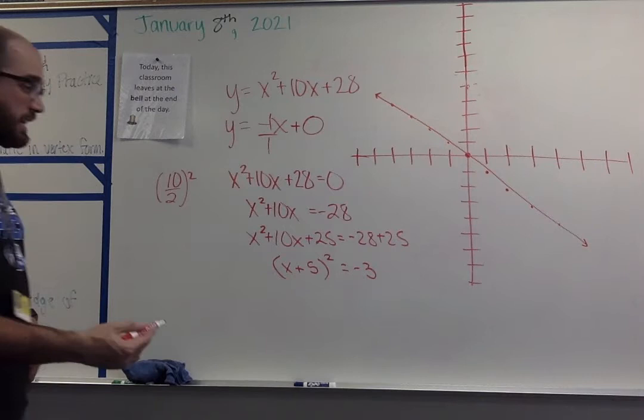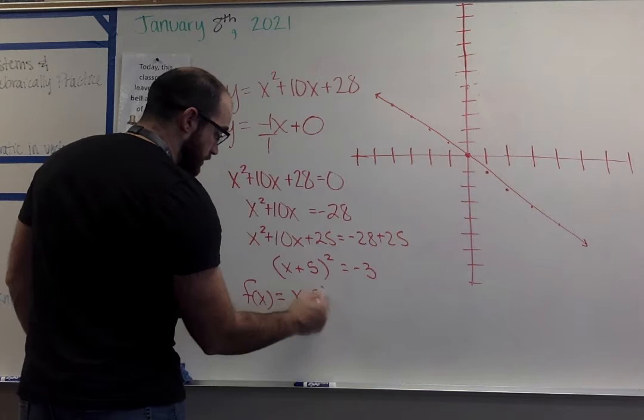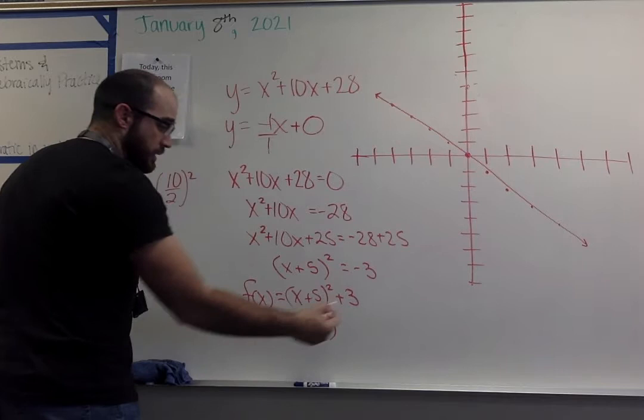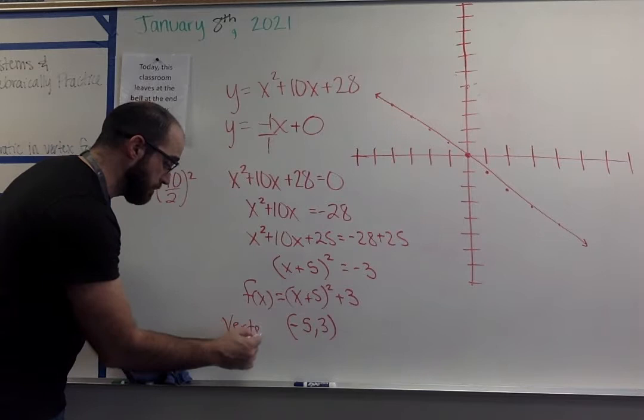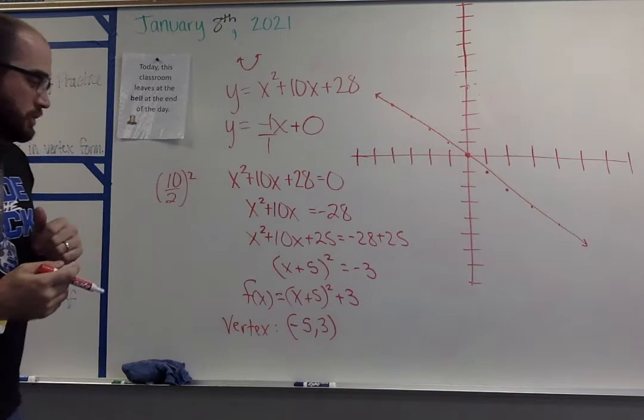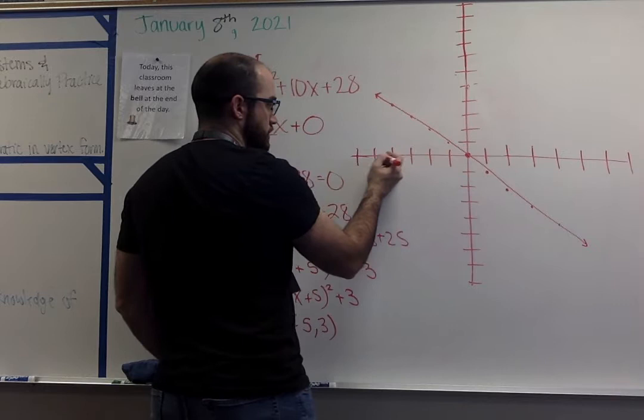The left side, the goal here is to get that perfect square, so I have x plus 5 squared equals negative 3. We want to move everything over to the left side to get our final equation, so I have f of x equals x plus 5 squared plus 3. Our vertex is opposite of whatever is in my parenthesis and then my k value comes down, so I have negative 5, 3 as my vertex.